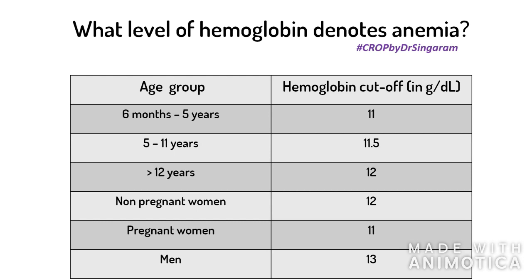Let's start with a common exam question: what is the level of hemoglobin that denotes anemia? According to the WHO, between 6 months to 5 years the cutoff is 11 g/dL; between 5 to 11 years it is 11.5 g/dL; above 12 years and in non-pregnant women it is less than 12 g/dL; in pregnant women it is 11 g/dL; and in males it is 13 g/dL.